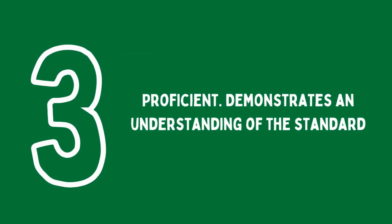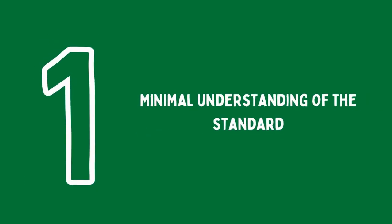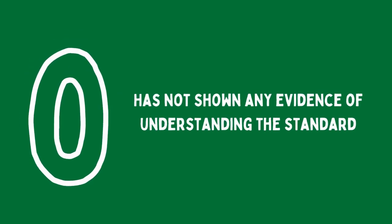A 3 means the student is proficient and demonstrates an understanding of the standard. A 2 means a student is developing an understanding of the standard. A 1 means the student has minimal understanding of the standard. And a 0 means the student has not shown any evidence of understanding.